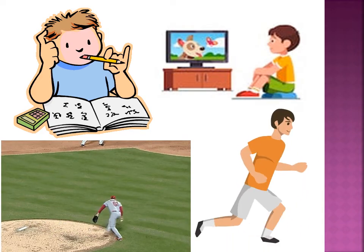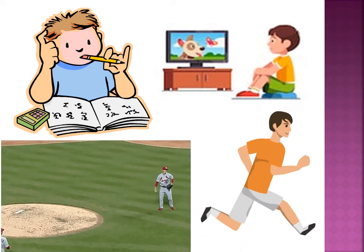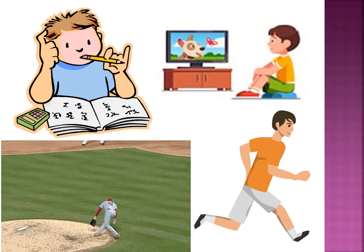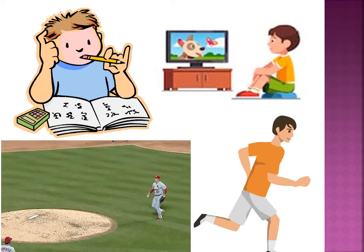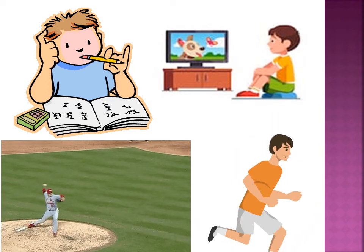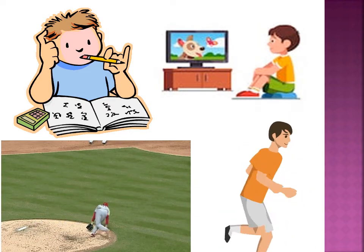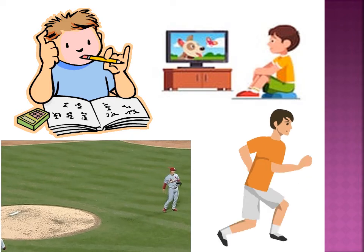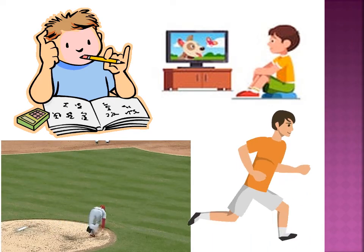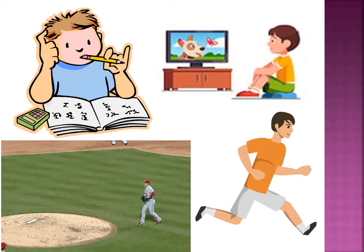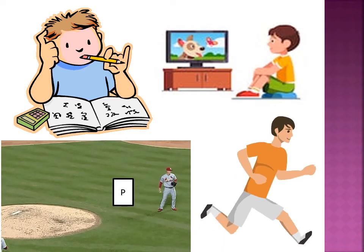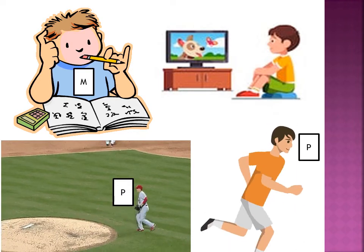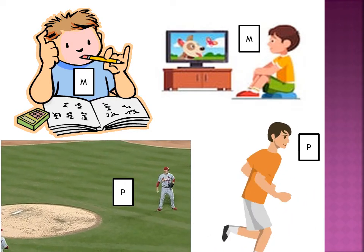In the previous chapter, you have already studied about displacement. Displacement is the minimum distance between the starting and the finishing point. From a scientific point of view, work is said to be done when there is displacement of the object. So work can be divided into mental work and physical work. The below two pictures refer to physical work and the above two pictures refer to mental work.